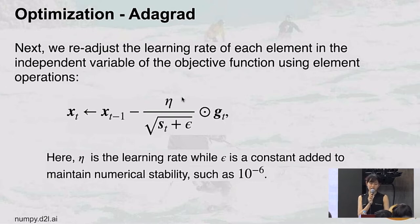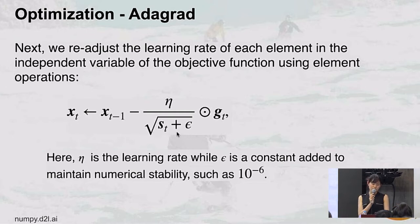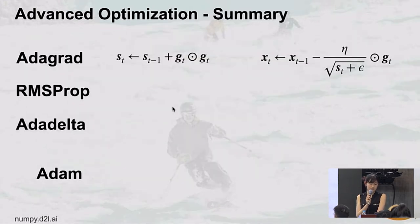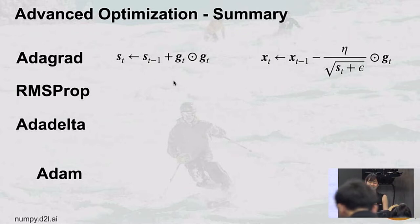We use this new learning rate times the current gradient to update x_{t-1}. The learning rate η is still small, and epsilon in the denominator maintains numerical stability — for example, if you get no gradient from g_0 to g_t then s_t would be zero, and we don't want to divide by zero. That's the basic intuition for AdaGrad. You don't need to memorize the formula, just understand these two math expressions.